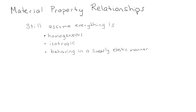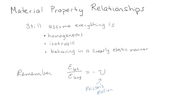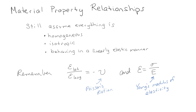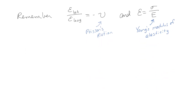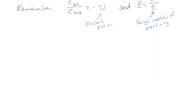There are a couple of things we want to make sure we remember. The lateral strain over the longitudinal strain is going to be the negative of nu, which is Poisson's ratio. And of course, strain is going to be the stress over Young's modulus of elasticity. Those are things we're going to assume you know how to use going forward.